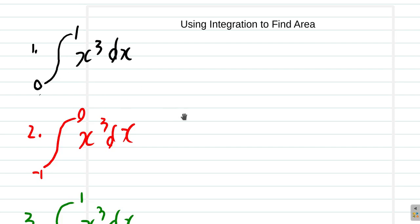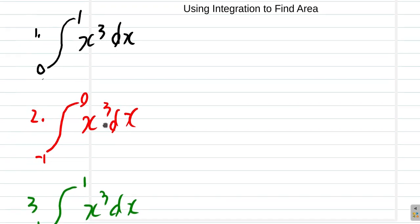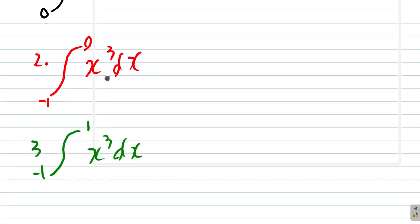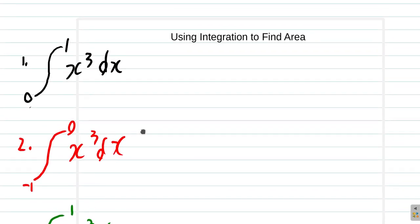Let us perform the following integrations to find the areas. First, the integral from 0 to 1 of x cubed dx. Secondly, the integral from negative 1 to 0 of x cubed dx. And then, the integral from negative 1 to 1 of x cubed dx. And see what these will yield.